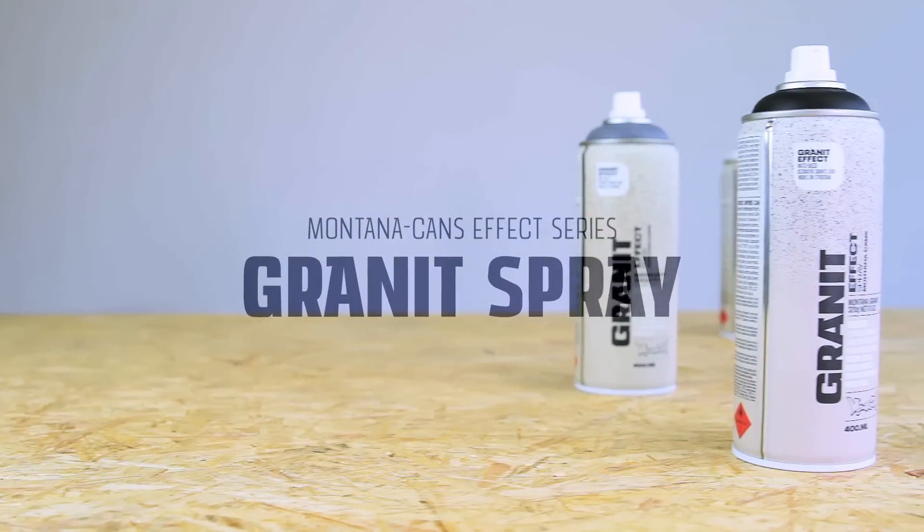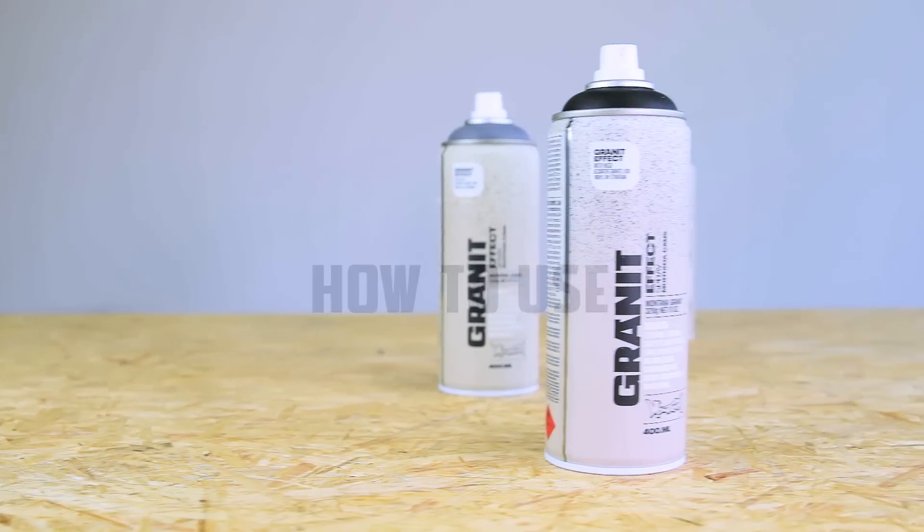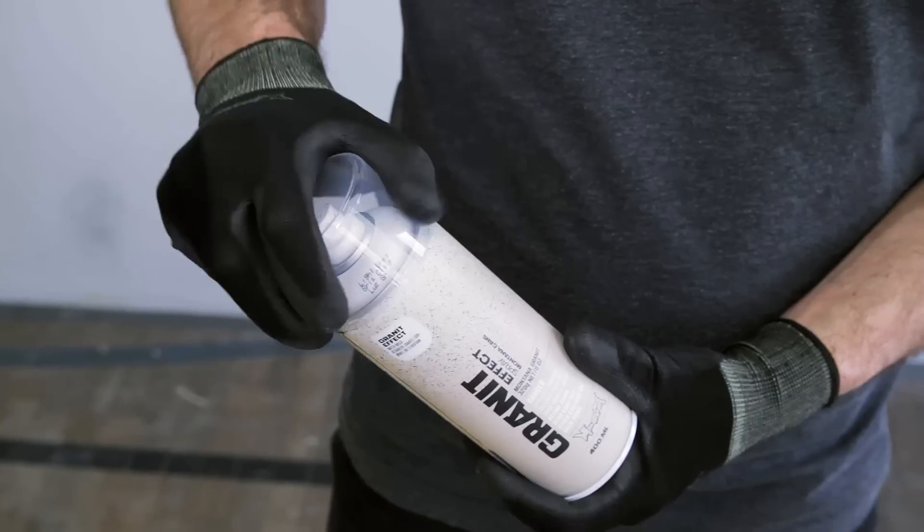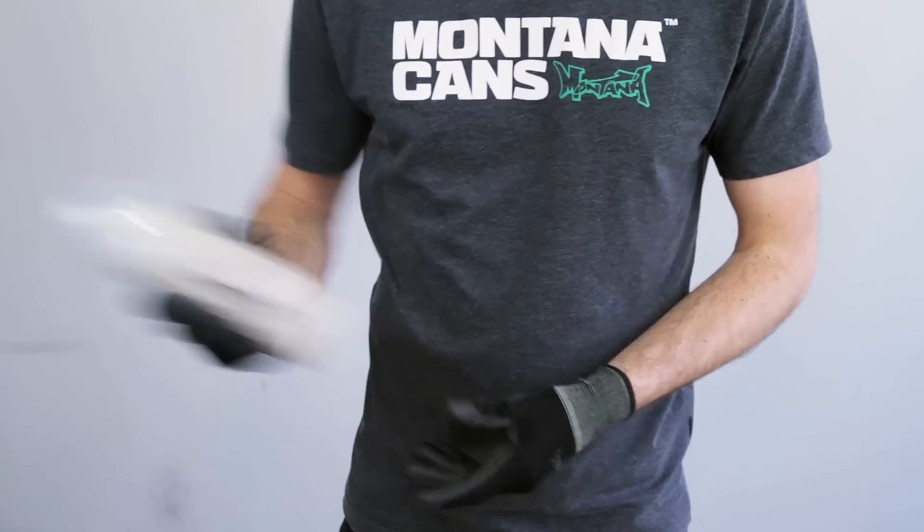Montana Granite Effect is a water-based special spray paint for deceivingly realistic granite effect. Surfaces should be clean and dry. Remove cap and shake can well for two to three minutes.